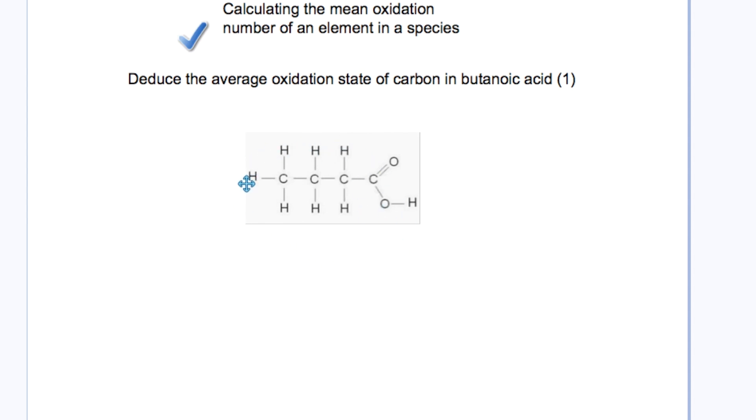Hydrogen has +1 in all cases, giving a total of +8 for all hydrogens. With hydrogen at +8 and oxygen at -4, the four carbons must contribute -4 so everything sums to zero. Dividing -4 by four carbons gives -1 as the average oxidation state of carbon in butanoic acid. You can also work out the oxidation state of each carbon individually, which when summed and divided by four also gives -1. Watch out for questions like this that assess the syllabus in ways you've never seen before.